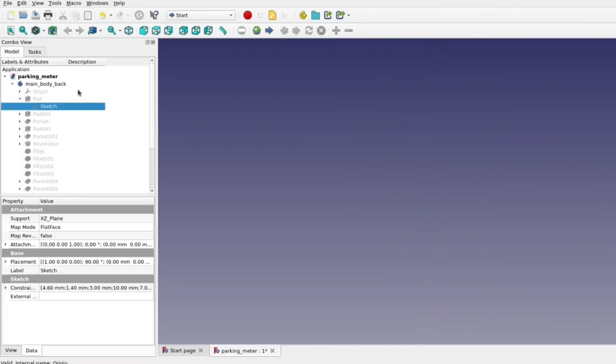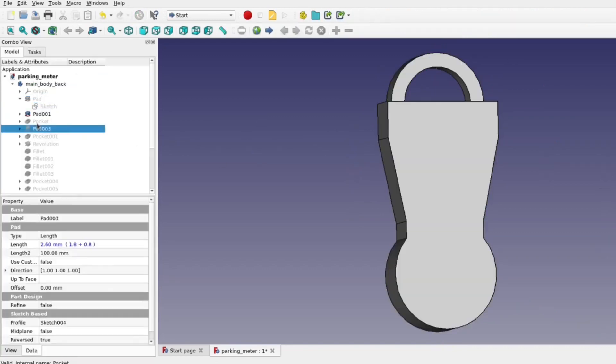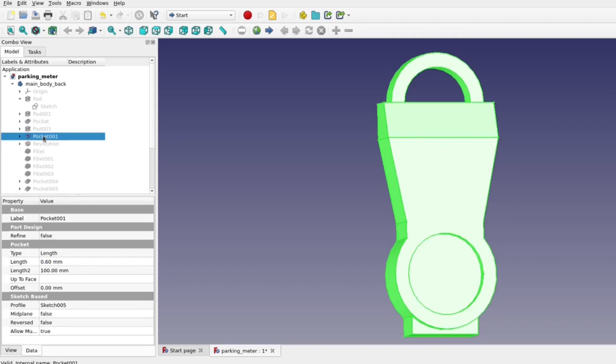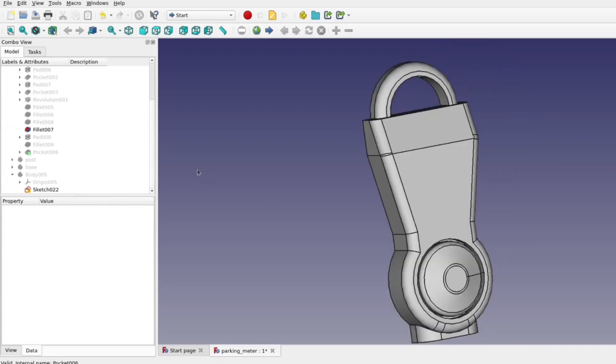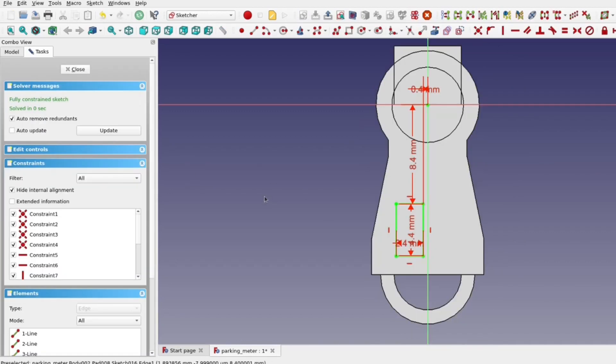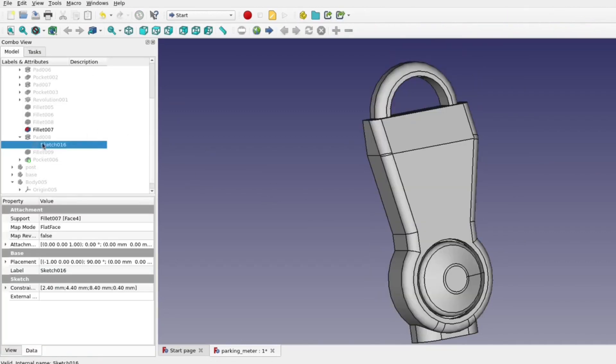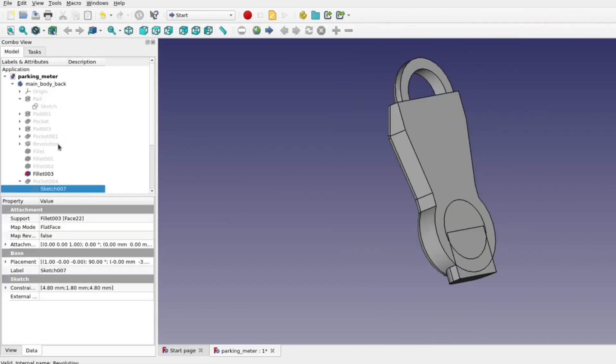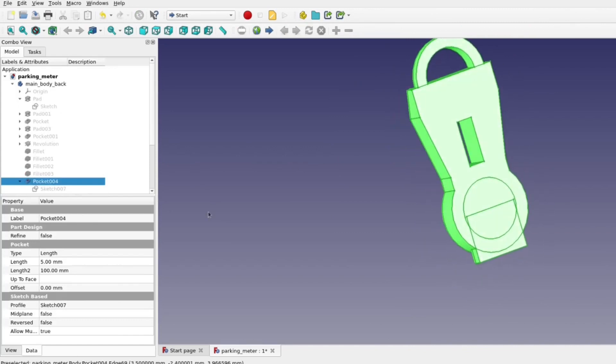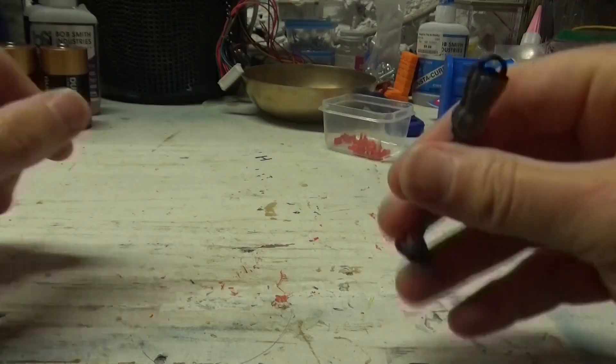And from there, I just went into FreeCAD, started modeling stuff up. Fairly straightforward to do. I made the base shape and kept adding features to what I needed for the one half of the parking meter body. And then I added to one side a little raised area for the coin slot. And on the other side, I cut out an area to contain the piece that would be the expired tag.